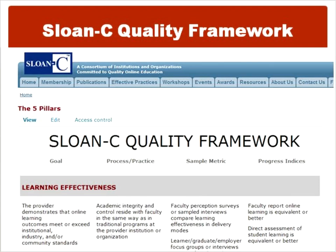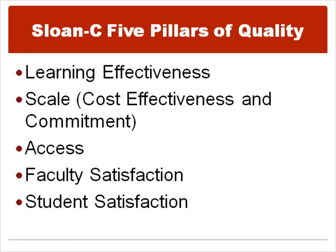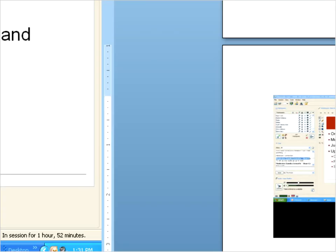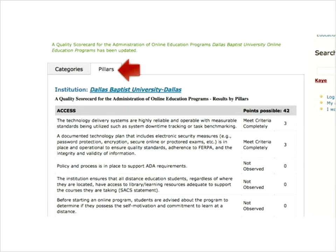Way before I began the research on quality programs, Sloan C had developed the Sloan C quality framework for institutions to measure progress towards goals they set in the areas of learning effectiveness, access, faculty, and student satisfaction and scale. The interactive quality scorecard actually dovetails perfectly with the Sloan C framework, so that you can see your results of the scorecard displayed by those five pillars of quality, as well as the nine categories within the scorecard. You would click on the pillars tab inside the interactive scorecard and see that particular indicators are associated with each pillar.